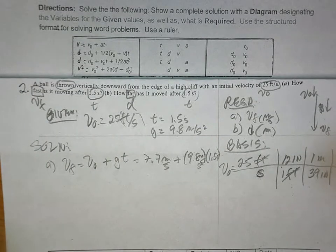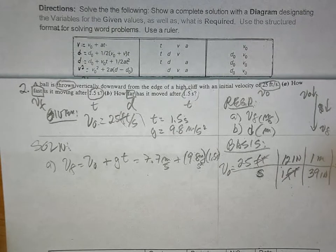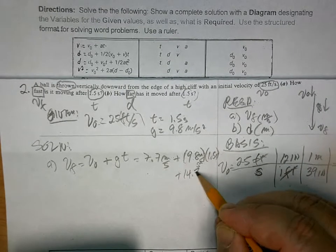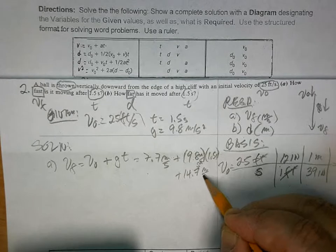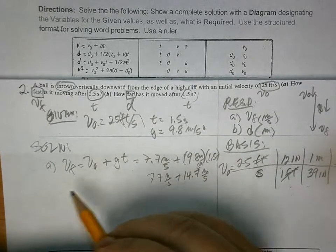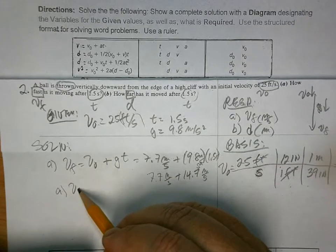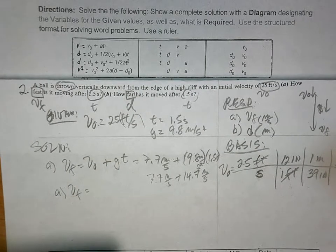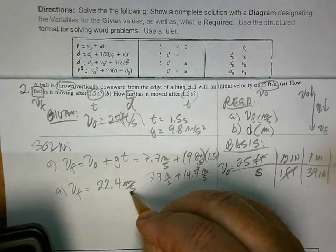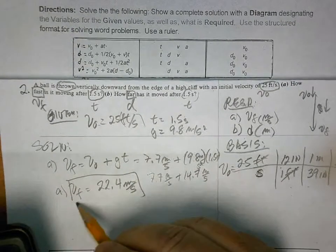Meters per second plus 9.8 times 1.5. This is meters per second squared. Seconds. That cancels. And you have meters per second. And we have to add them up. So, it's 9.8 times 1.5. I have 14.7 meters per second plus 7.7 meters per second. So, for letter A,